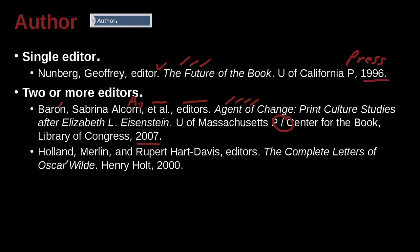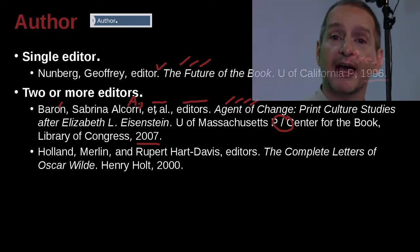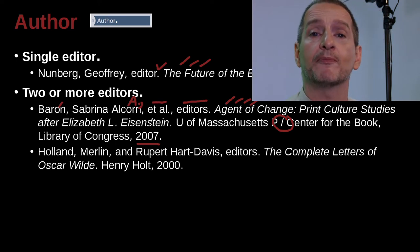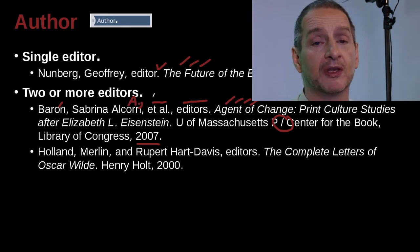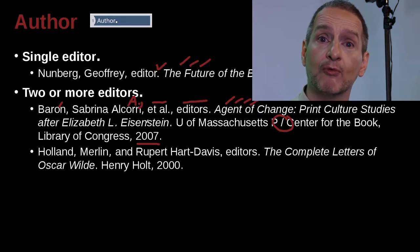Let's look at another example. Colin Merlin and Rupert Hart-Davis, editors. So what's this case? This case is two people. Remember: if we have one person, we must have the last and first name. If we have two people, we must have the whole name. If we have three people, we must use et al. In this case we have just two people, so in MLA if you have two people, you must list both people.